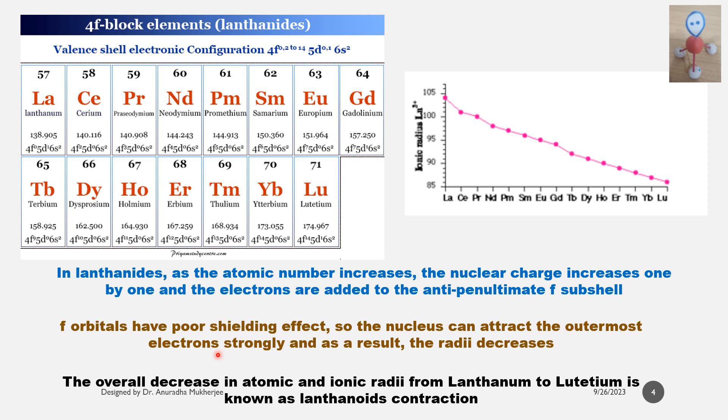Now f orbitals have poor shielding effect, so the nucleus can attract the outermost electrons strongly. And as a result, the atomic radius decreases. From this graph you can see that atomic radius or ionic radius is decreasing from lanthanum to lutetium due to lanthanide contraction.